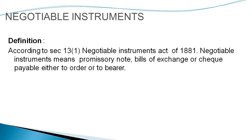Coming to the definition of negotiable instrument, according to Section 13 subsection 1 of the Negotiable Instruments Act of 1881, a negotiable instrument means a promissory note, bills of exchange, or a cheque which is payable either to order or to a bearer. Bearer here is the holder of the instrument.